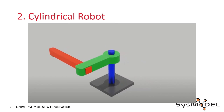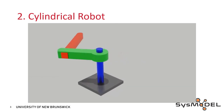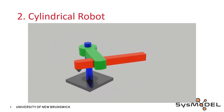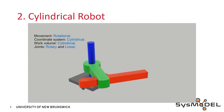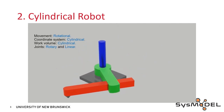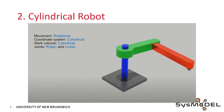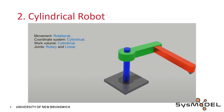Here is an example of the robot we'll be working with. As we can see, the robot consists of two types of joints: one cylindrical and one prismatic. Let's implement this robot in Modelica.